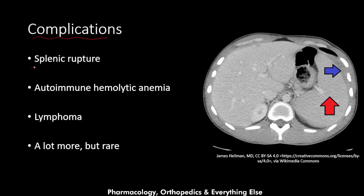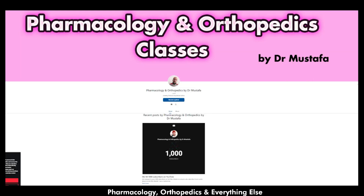Complications of mono include splenic rupture — here is an example showing a subcapsular hematoma — autoimmune hemolytic anemia, and potential transformation to lymphoma, along with many other rare complications. That concludes this video.